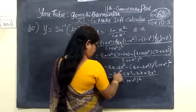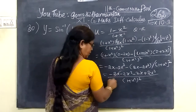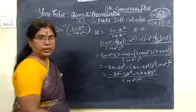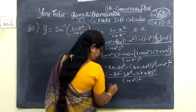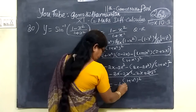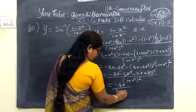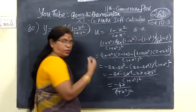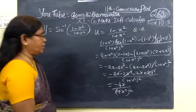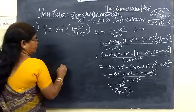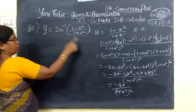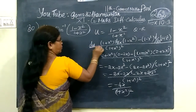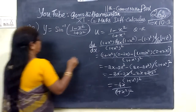Now plus 2x cubed — the minus 2x cubed terms will be getting cancelled — so we get minus 4x by 1 plus x squared, the whole squared.